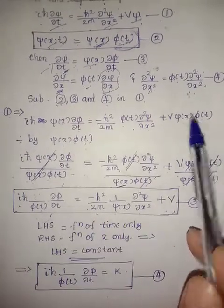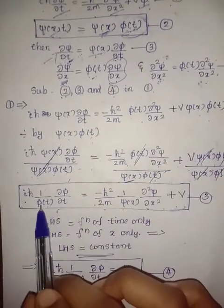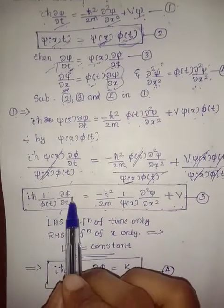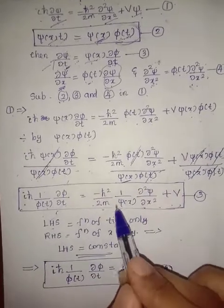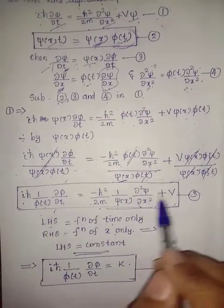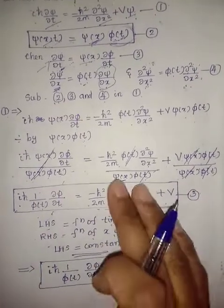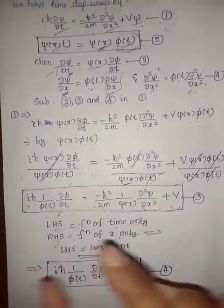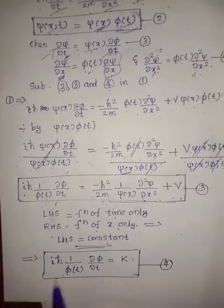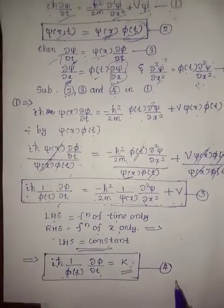Now look at this equation. The LHS contains time only — φ(t) and ∂φ/∂t — with no position variable, so LHS is a function of time only. The RHS contains only x as the variable, with no time. So RHS is a function of x only. By the separation of variables rule, if each side depends on a different variable, both sides must equal a constant. Therefore, iħ · (1/φ(t)) · ∂φ/∂t = constant K. That is equation number 4.